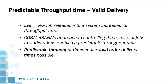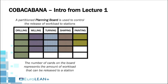Every new job released into a system increases the throughput time of the system. KoboKabana's approach to controlling the release of jobs to workstations enables a predictable throughput time, which then makes valid delivery commitments to customers possible. In lecture 1, we showed how a partitioned planning board is used in KoboKabana to monitor and control the release of workload, using cards displayed on this board to keep track of current workload at respective stations.